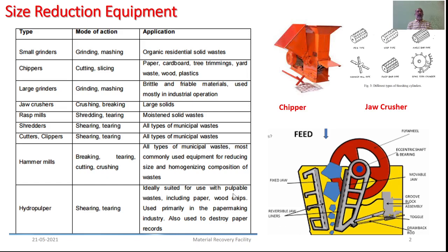As you see here, there are various equipment like grinders, chippers, jaw crushers, rasp mills, shredders, cutters, hammer mills, and hydropulpers. This list is not just limited. I am trying to make you aware of what kind of equipment are available, what is their mode of application, and where we can use them.